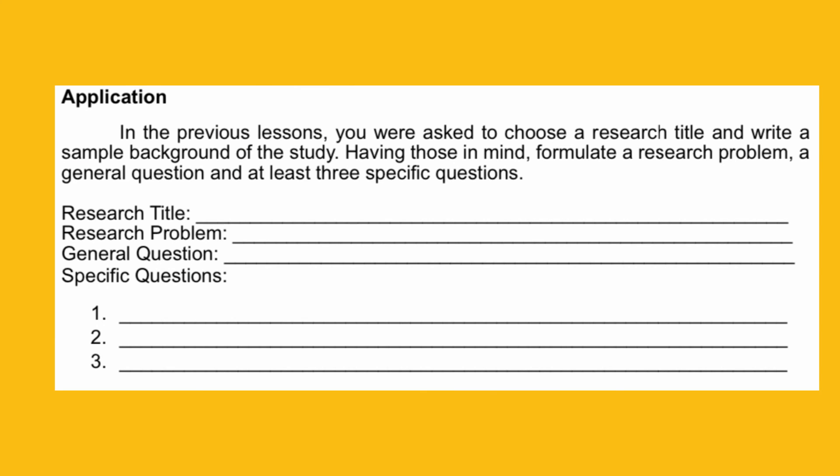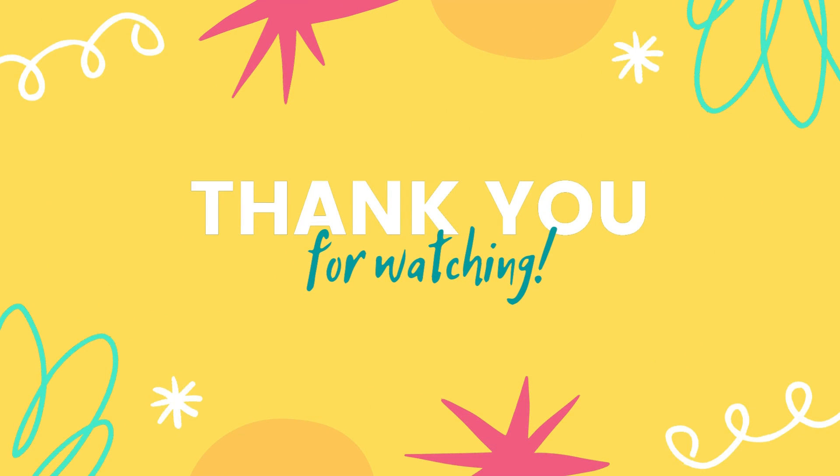This time, you have to formulate your own general question and specific questions. In the application portion, you were asked to choose a research title and write a sample background of the study. Having those in mind, formulate a research problem, a general question, and at least three specific questions. In actual research writing, the minimum number of specific questions is three. Since this is just a mock research writing, you may place three specific questions, but if you can think of more, that's better. Congratulations for being able to formulate your general question and specific questions. That's all for Lesson 11. Thank you for watching!